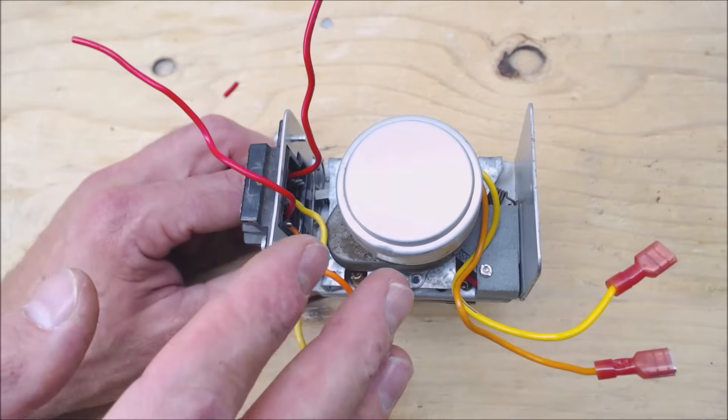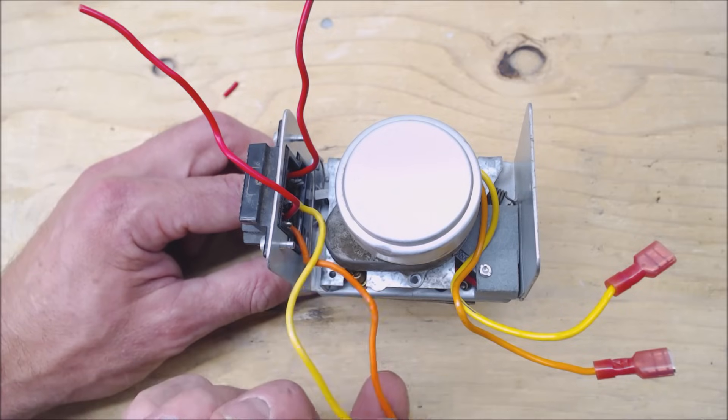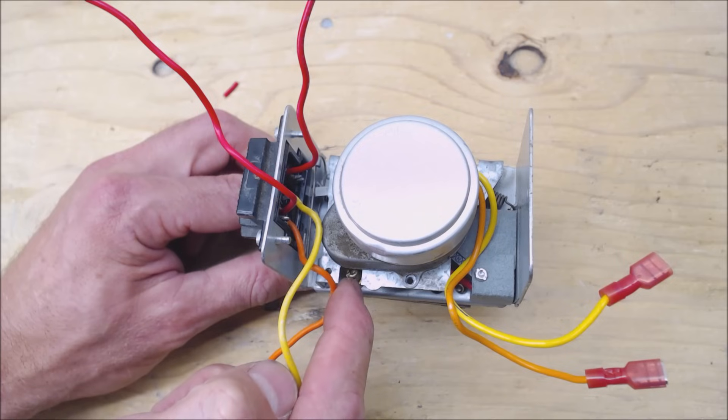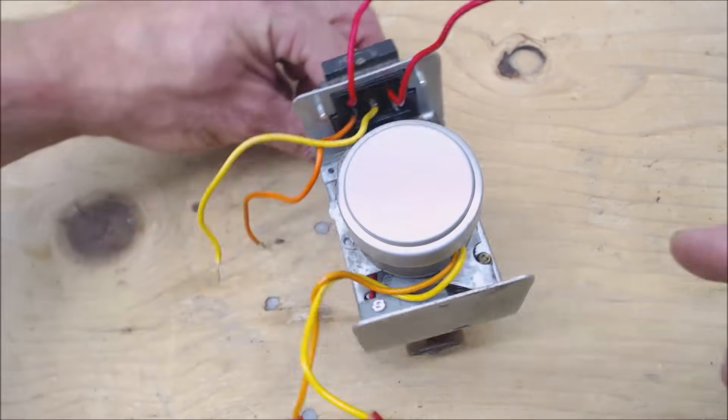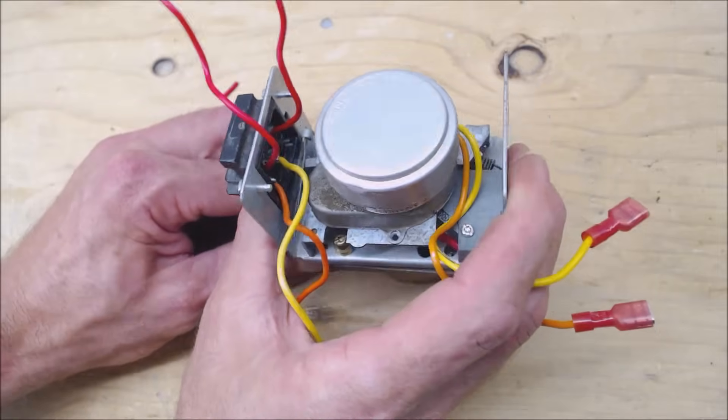I've already cut the wires here but these two led over to the end switch and these two connected right here. All you really need to do is unscrew this screw right here and this one right here in order to remove this entire assembly.